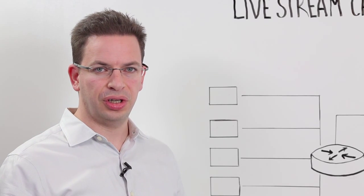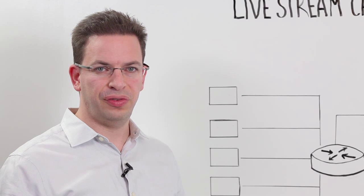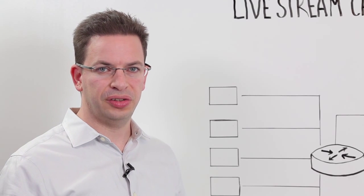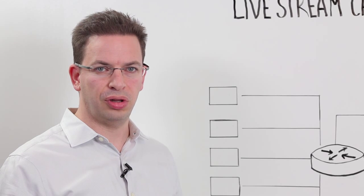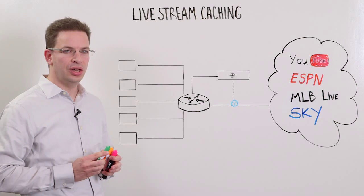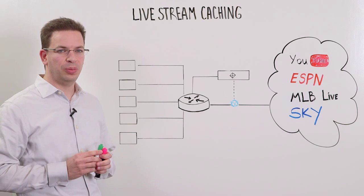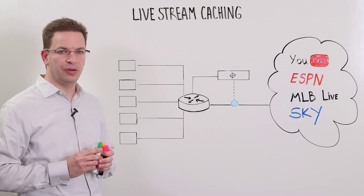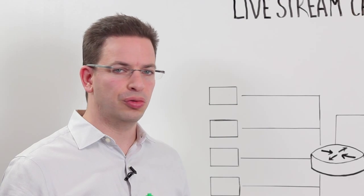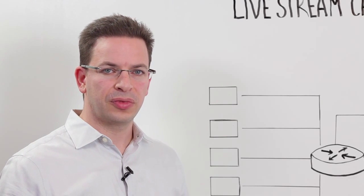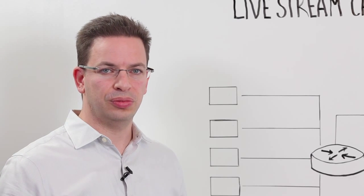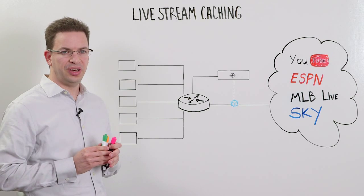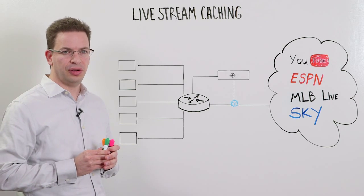Online video has traditionally revolved around video-on-demand content from sites like Netflix and YouTube, offering both long-form and short-form content. Over the last couple of years, we've seen a rapid increase in streaming of popular live events such as the Royal Wedding, the 2012 Olympics, and the latest Super Bowl. Live video streaming is still in its infancy, though.